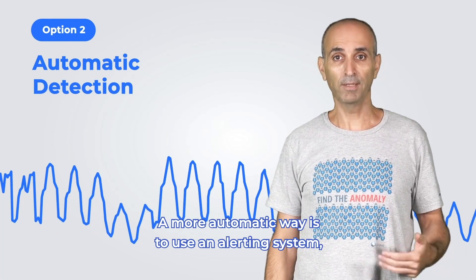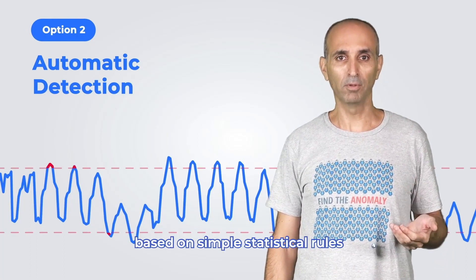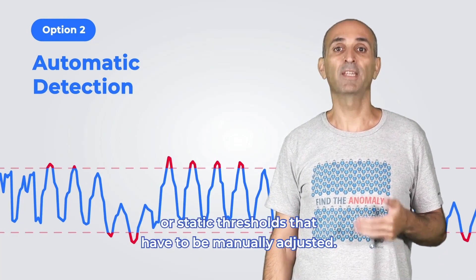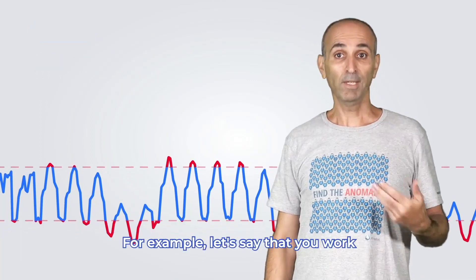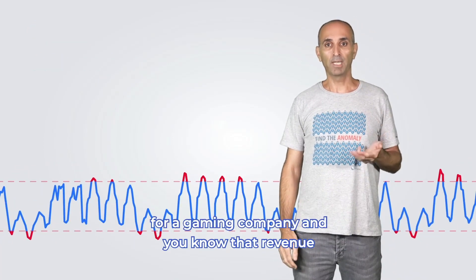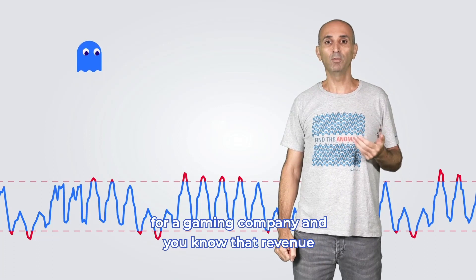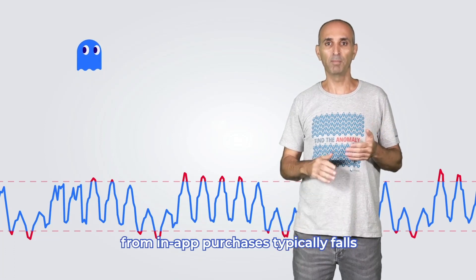A more automatic way is to use an alerting system based on simple statistical rules or static thresholds that have to be manually adjusted. For example, let's say that you work for a gaming company and you know that revenue from in-app purchases typically falls between a certain range.